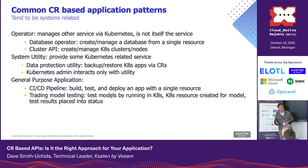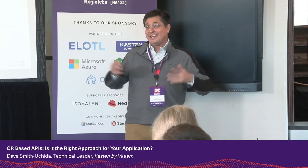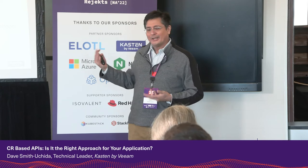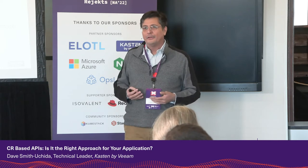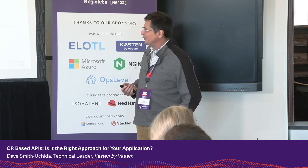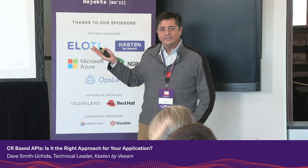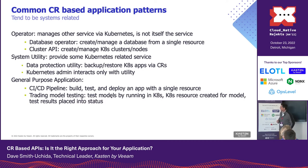A lot of things we see are system utilities — backup apps, for example — where you're controlling the application via CRs. And then there's general purpose applications. When we did the proposal we thought lots of people must be doing these, but it turned out not that many people are doing that publicly. I suspect there's an awful lot of things that are internal that we don't see. An example might be a CI/CD pipeline controlled by Kubernetes resources, or something for trading model testing where you write a resource saying you want to test your new model, the application spins up a few pods, runs your model, gets the results and puts it back.